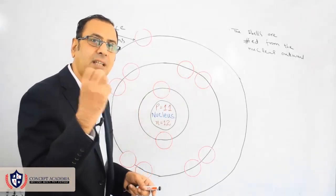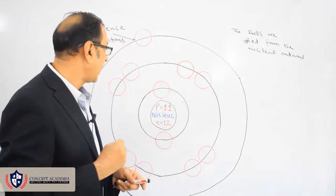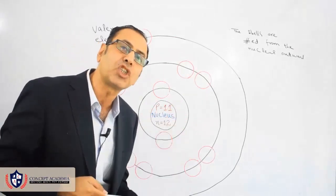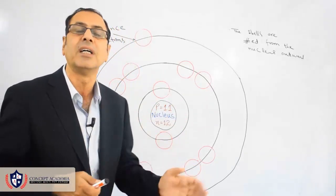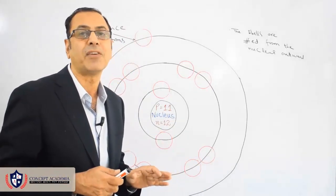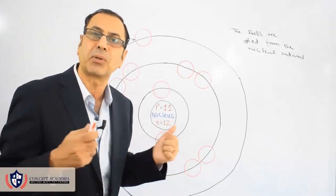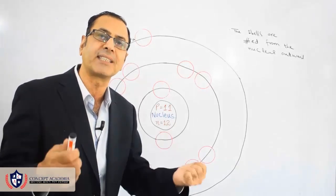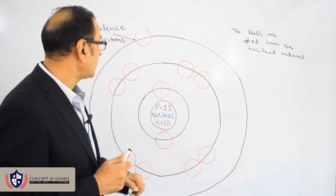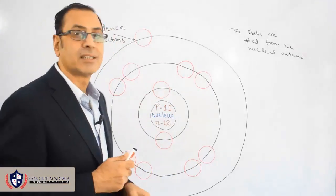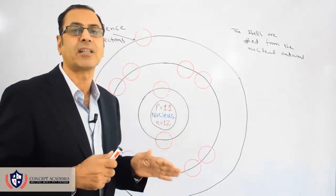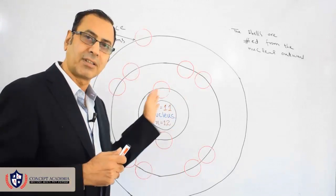Protons are positively charged particles, and neutrons have no charge on them. So the nucleus has a positive charge because of the presence of protons. And outside the nucleus are electrons, which are revolving around the nucleus.